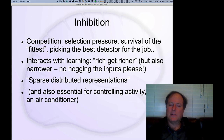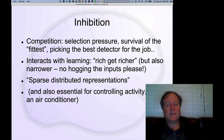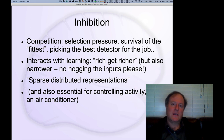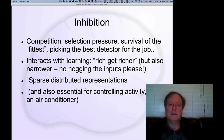The effects of inhibition are essentially to produce competition, which works very much as in Darwinian evolutionary theory. You have a survival of the fittest kind of dynamic — this competition for which neurons are going to get active and represent the current incoming information. The neurons that get the most excitation and fire earliest and strongest essentially out-compete the neurons that don't get as much excitation. We'll see in the next chapter how that competitive dynamic interacts with learning.